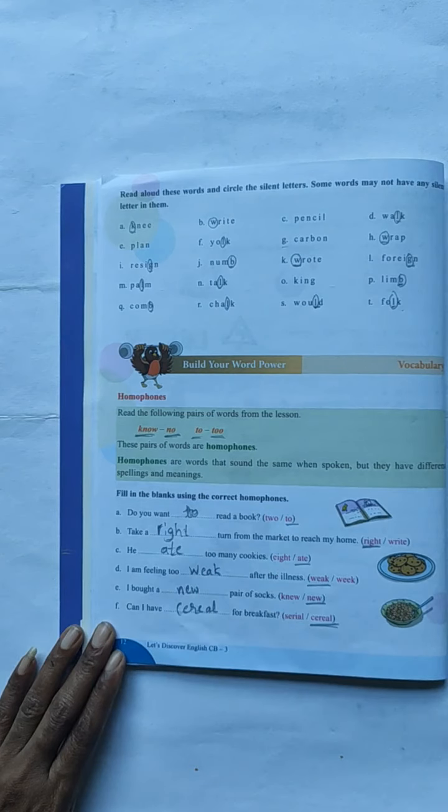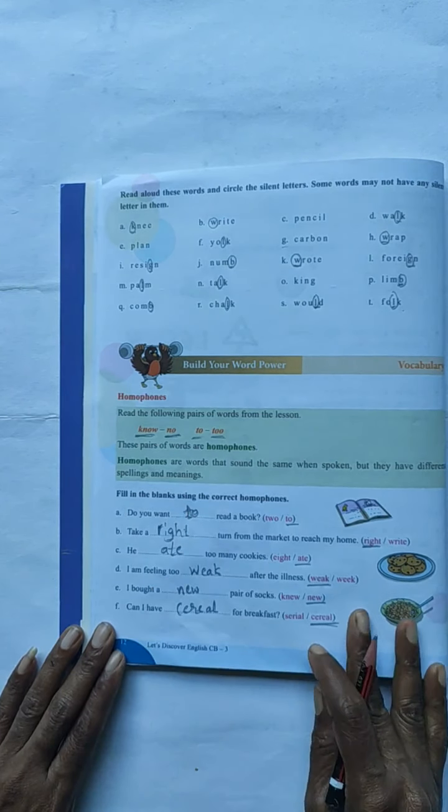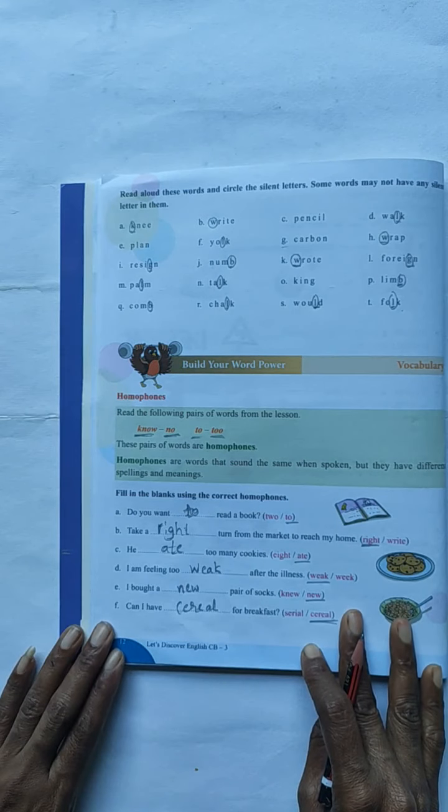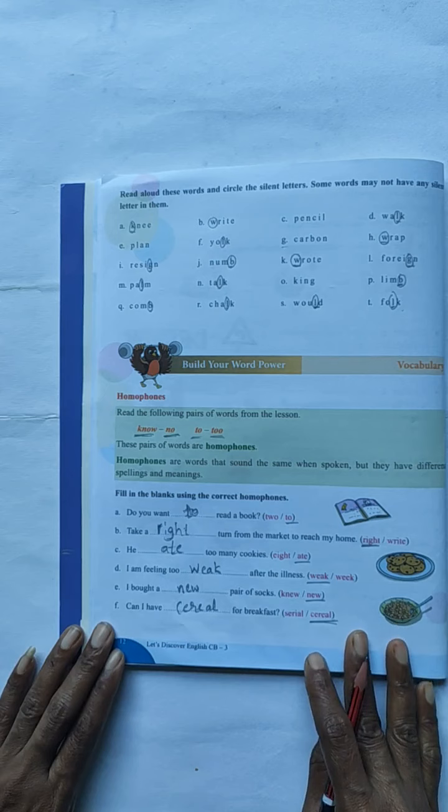T-O-2. Do you want to read a book? Yes children. You have to write here T-O-2 word.